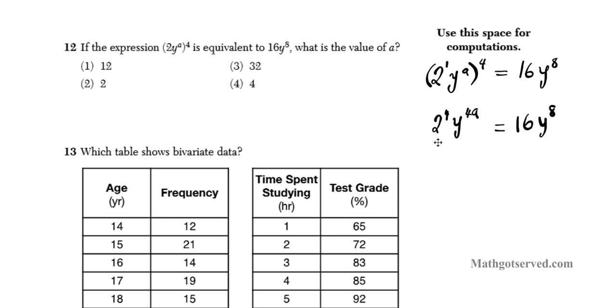Now 2 to the 4th is 4 times 4, which is 16. So we have 16y to the 4a equals 16y to the 8th. You notice that they have two 16s here, so we can divide by 16 and drop the y's too. Since the base is equal, let's divide by 16 first. We're going to have y to the 4a equals y to the 8th.